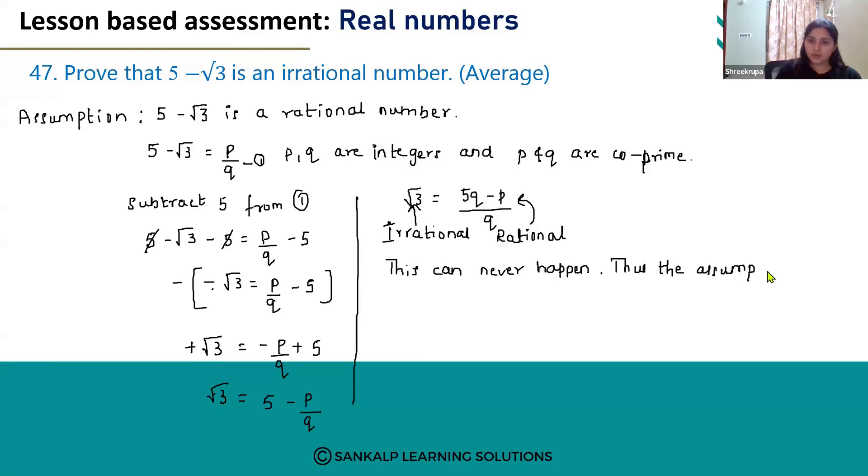The assumption is false. If the assumption is false, then the statement given should be true, that is, 5 minus root 3 is an irrational number. And it is true.